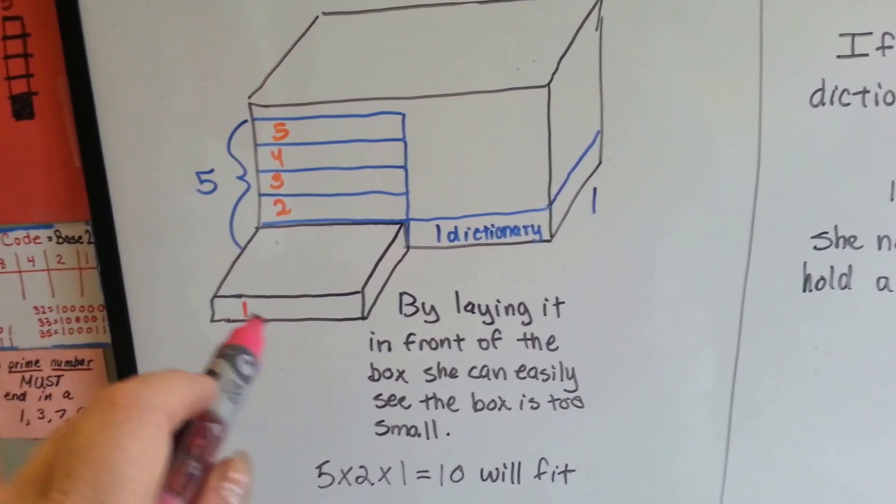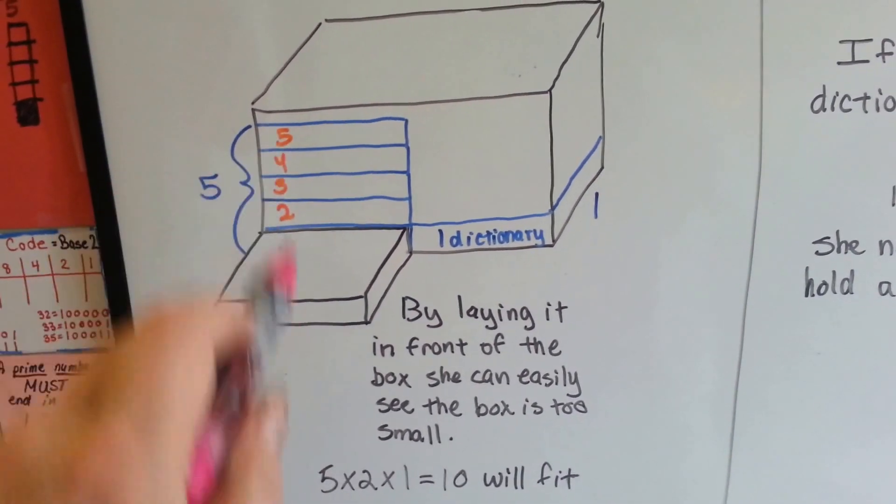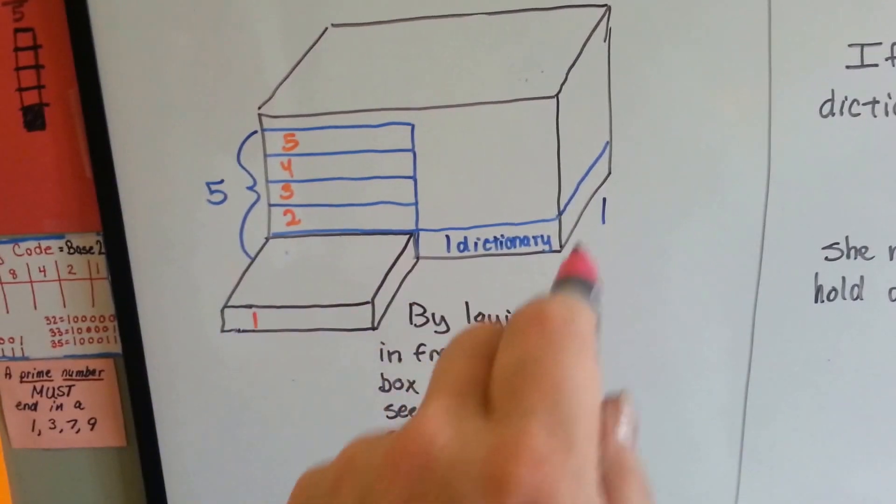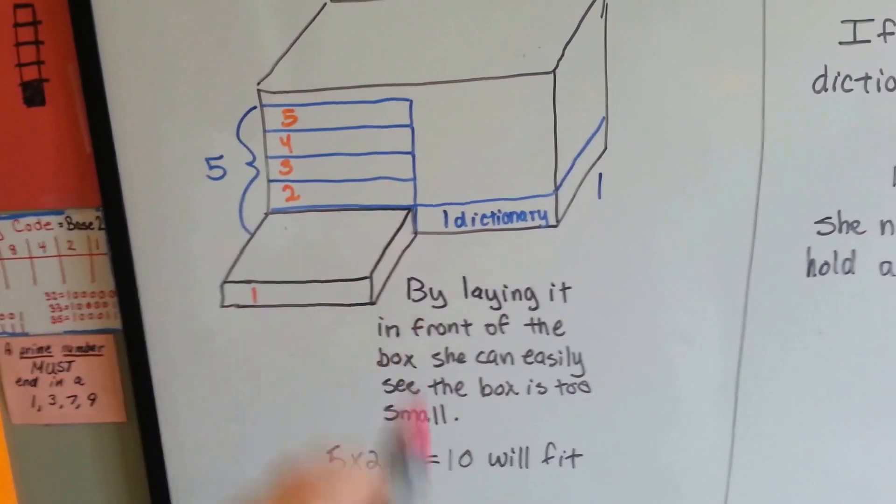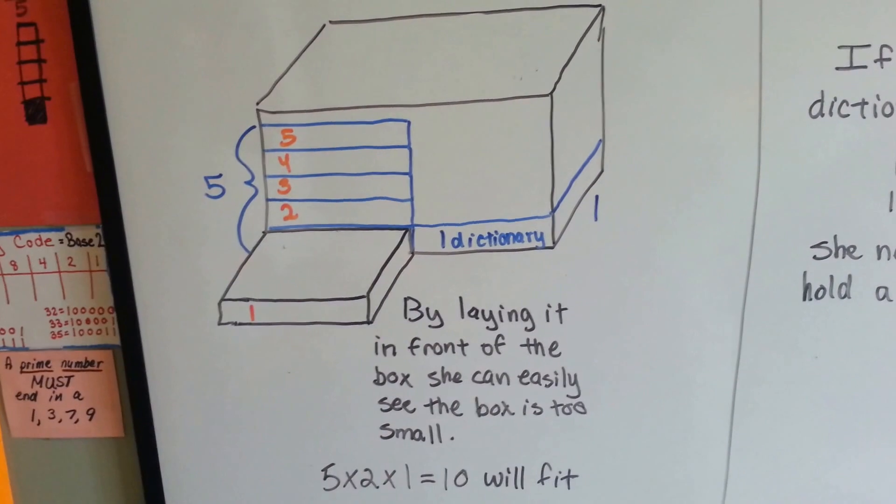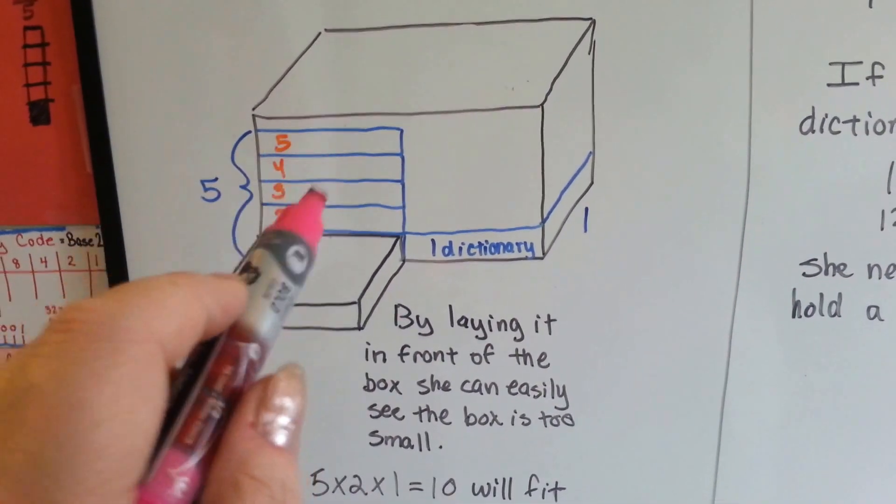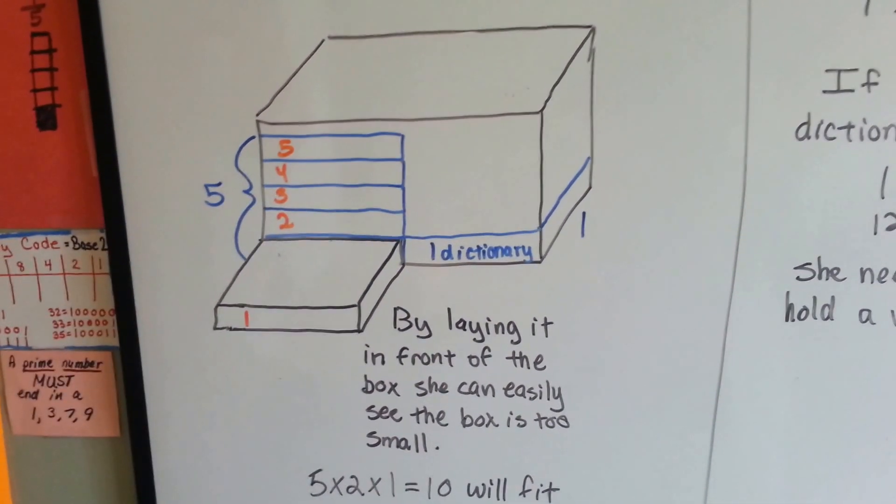She estimated that she could fit five tall, two wide, and one deep. Five times two times one, she knows ten will fit. She knows that they're only going to be able to fit ten dictionaries in this box instead of the twenty-four she needs. She needs a bigger box.